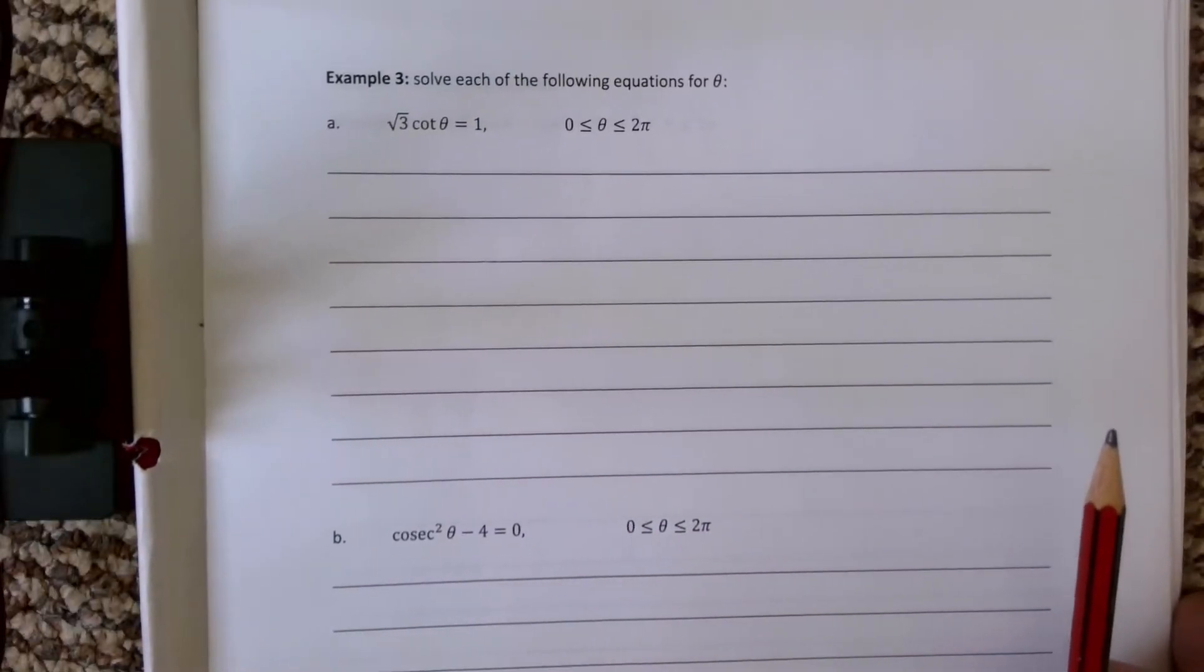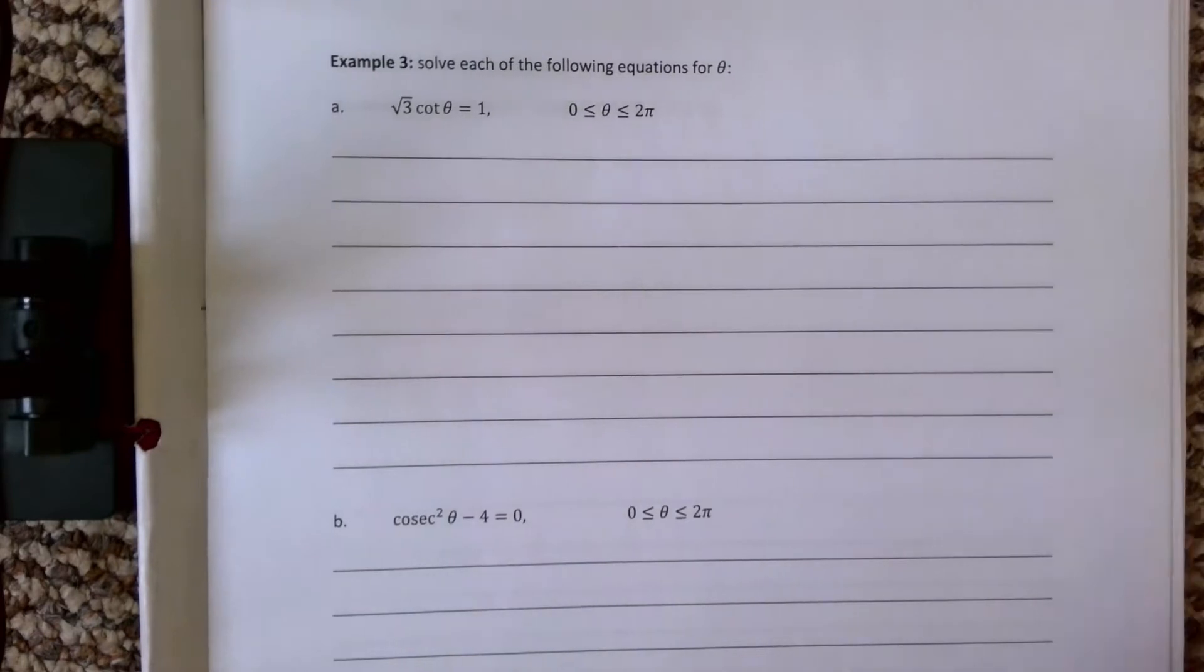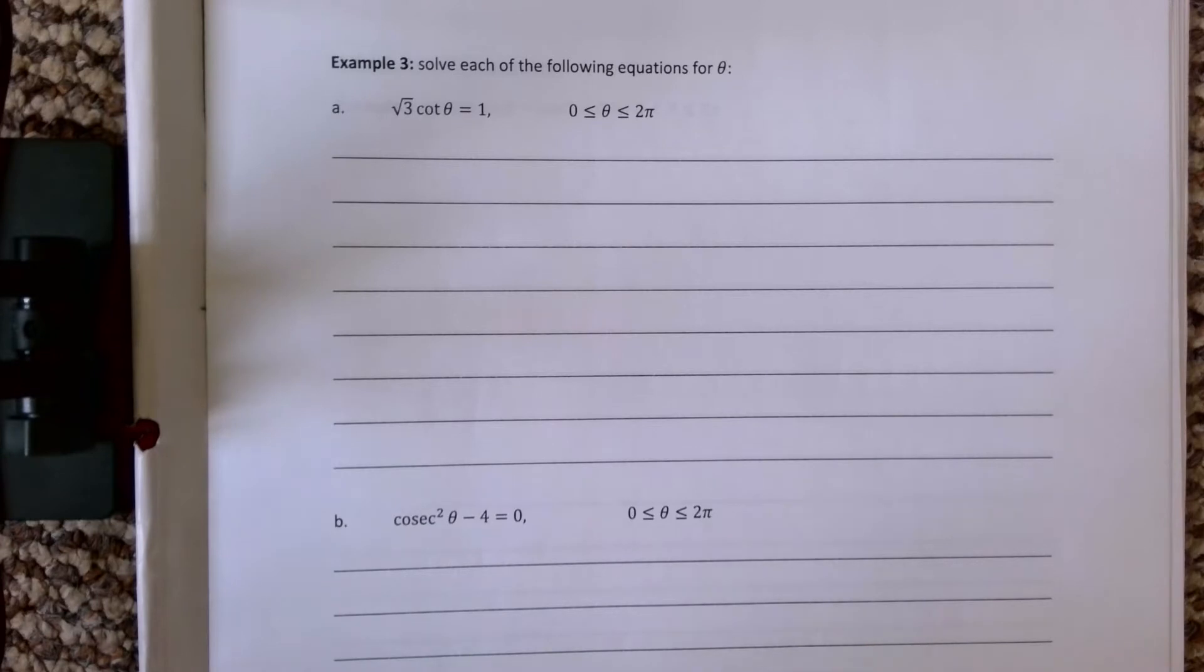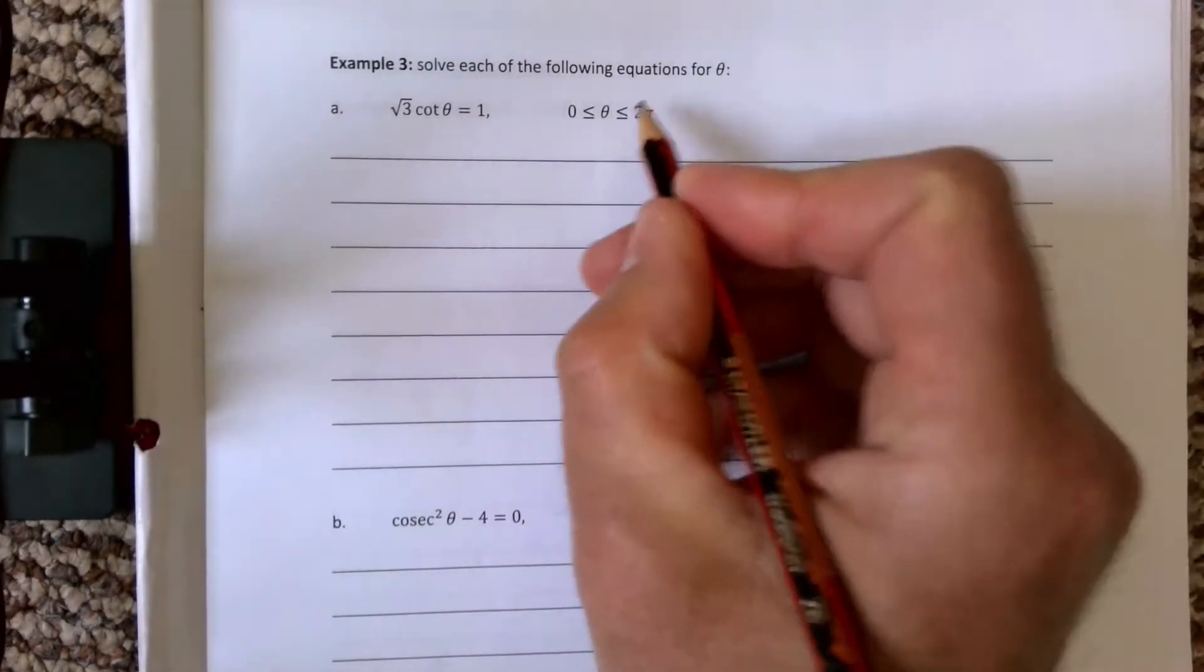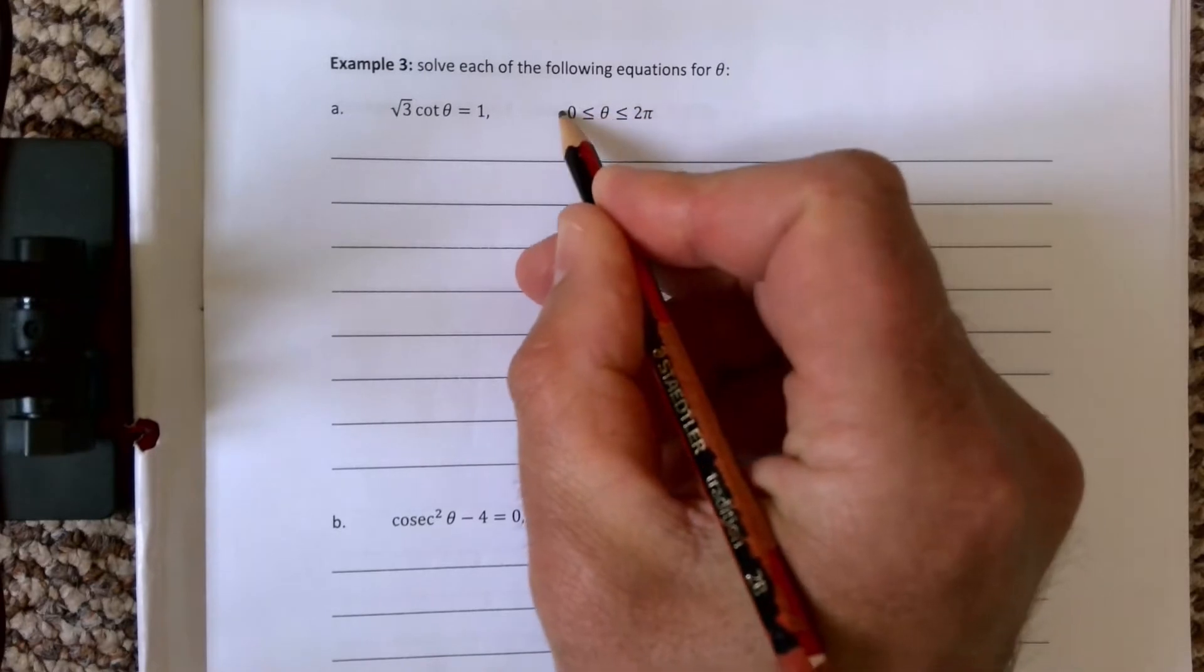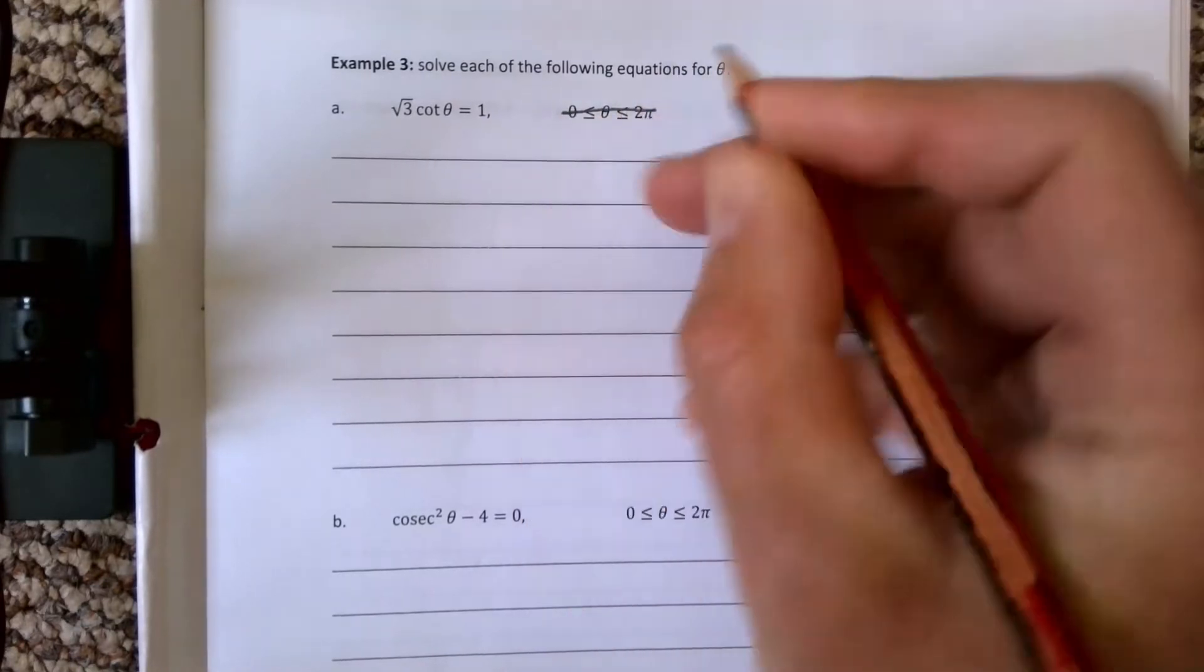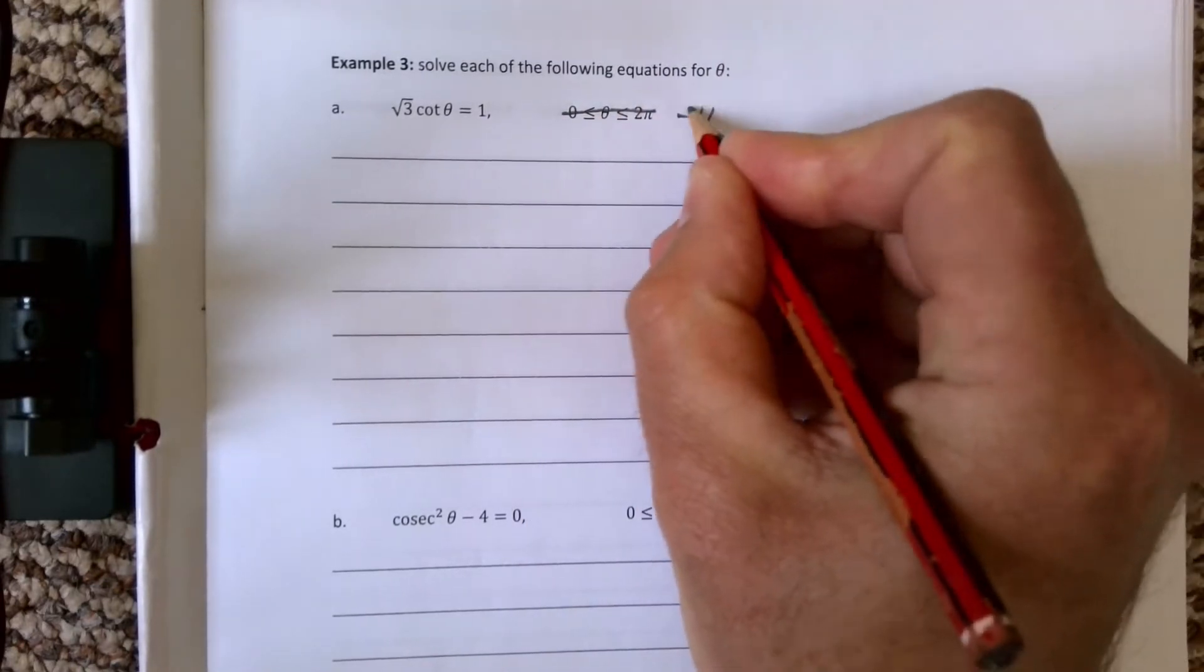This is A2 Pure Trigonometry, and we are solving some trig equations. This one says solve each of the following equations for theta. I'm going to change this up—instead of going between 0 and 2π, I'm going to use minus π to π for variety.